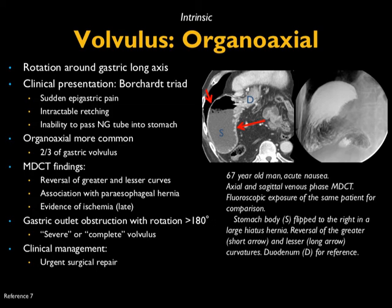There can be evidence of ischemia, though ischemic changes are usually late. The classic finding is gastric outlet obstruction with 180 degrees or more of rotation. Clinical management is surgical. In this case, you can see the body of the stomach is flipped to the right in a large hiatal hernia, with reversal of the greater and lesser curvature nicely demonstrated on CT.